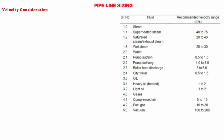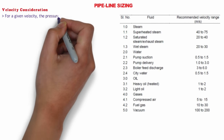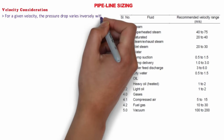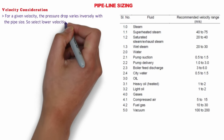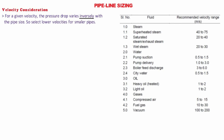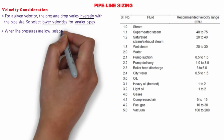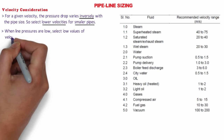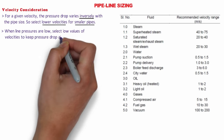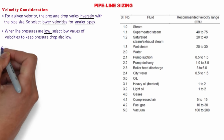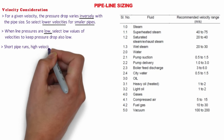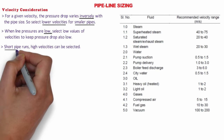We are going to refer the given table for the ranges of suitable velocities corresponding to all the main services — you can refer to the table appearing on your screen. While selecting a particular velocity value, keep the following guidelines in mind: for a given velocity, the pressure drop varies inversely with pipe size, so select lower velocities for smaller pipes. When line pressures are low, select low values of velocity to keep pressure drop also low. Conversely, for high pressure lines, higher velocities can be considered. For short pipe runs, high velocities can be selected, as in such cases pressure drop is minimal and can be ignored.